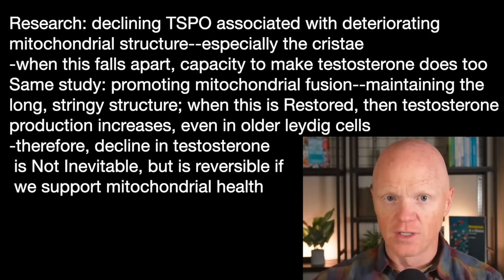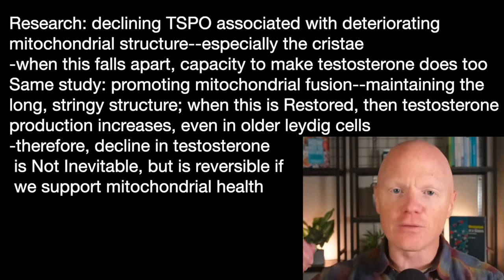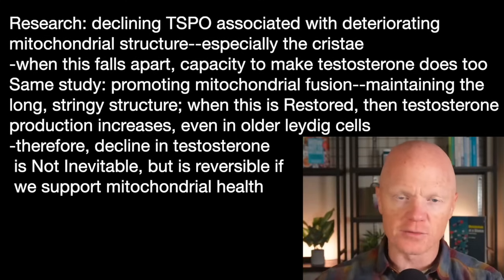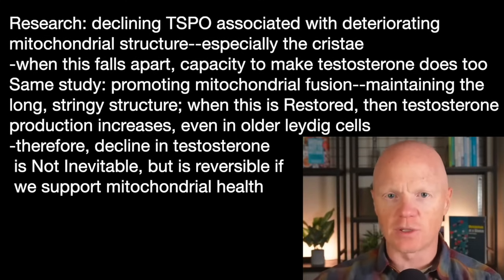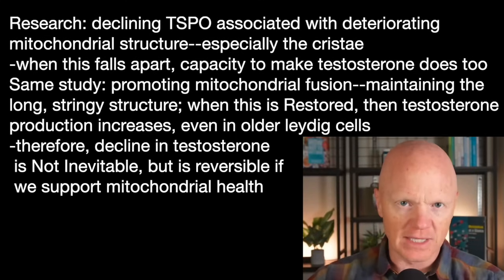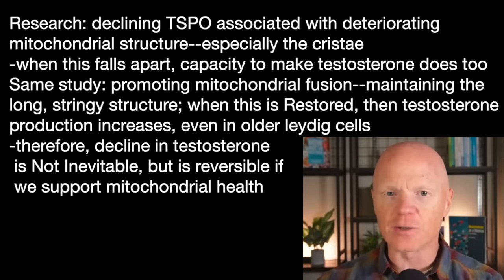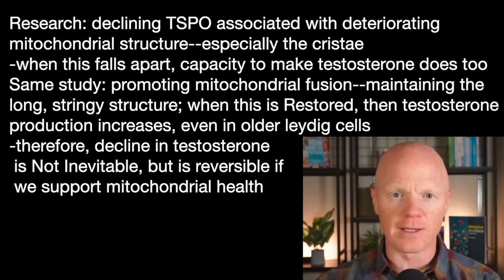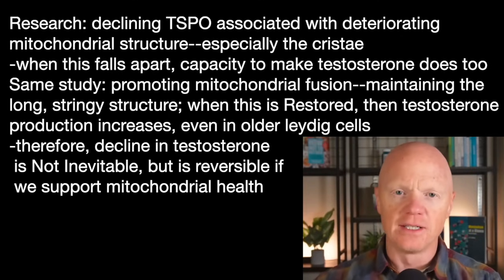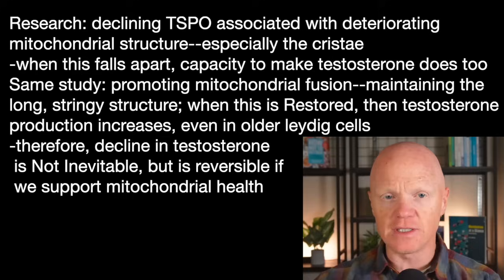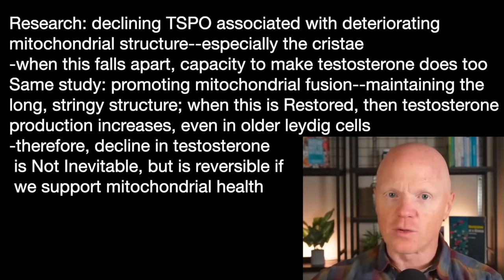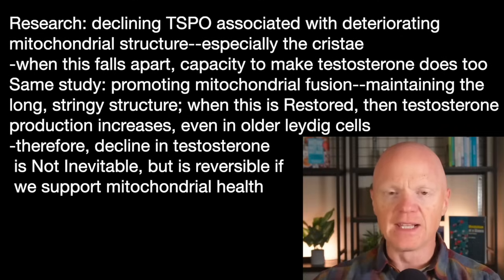Specifically, the cristae — the inner foldings of the mitochondria — are where so much of the cell's energy production happens. The electron transport system, for example, is located on the crista, the inner mitochondrial membrane. When the architecture or structure of the mitochondria is compromised or falls apart, so does the cell's capacity to make testosterone.